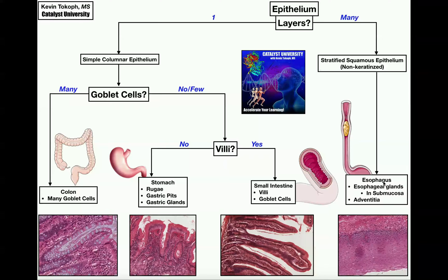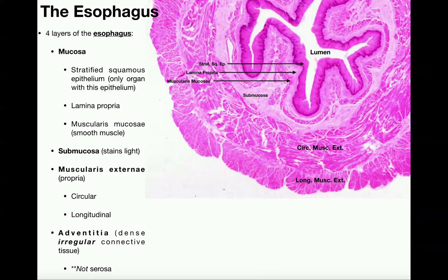The other things we're going to see in the esophagus is that in the submucosal layer there are esophageal glands. Also, the esophagus is the only one whose outermost layer is the adventitia. All the other ones have what's called serosa.